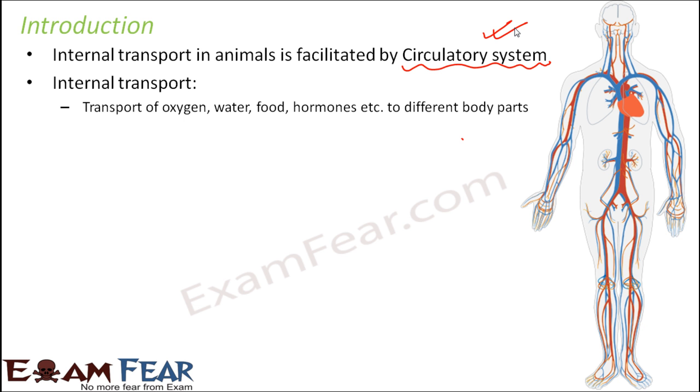One such example is transport of oxygen. We breathe in oxygen because all cells of our body need oxygen. When oxygen is breathed in, it directly reaches our lungs, but from lungs it needs to be transported to different cells of the body. Transport of water—each and every cell needs water. Transport of food, transport of hormones—all these transportation is taken care by the circulatory system.